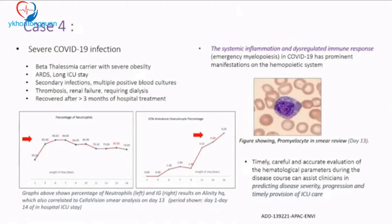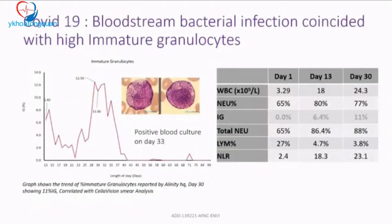After day 30, the IG count actually increased further, which was surprising. Based on this rising IG count, we advised repeat blood culture. The clinicians persisted with treatment, and on day 33, the blood culture came back positive. The WBC count had risen from 3.29 on day one to 18 on day 13 and 24.3 on day 30. The IG rose from 6.4 to 11 by day 30, indicating a secondary infection.